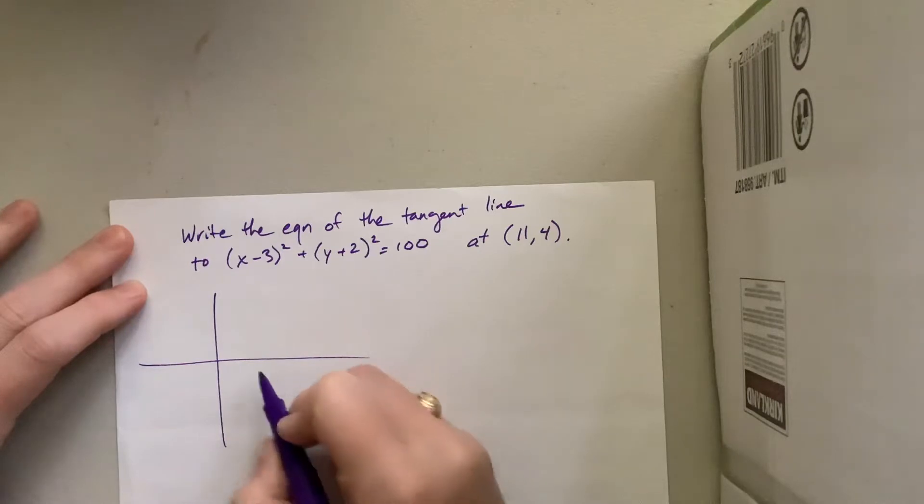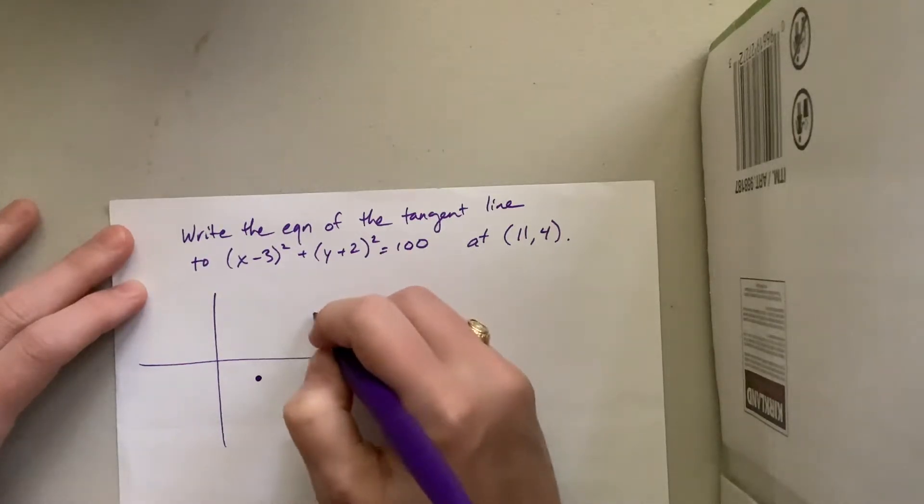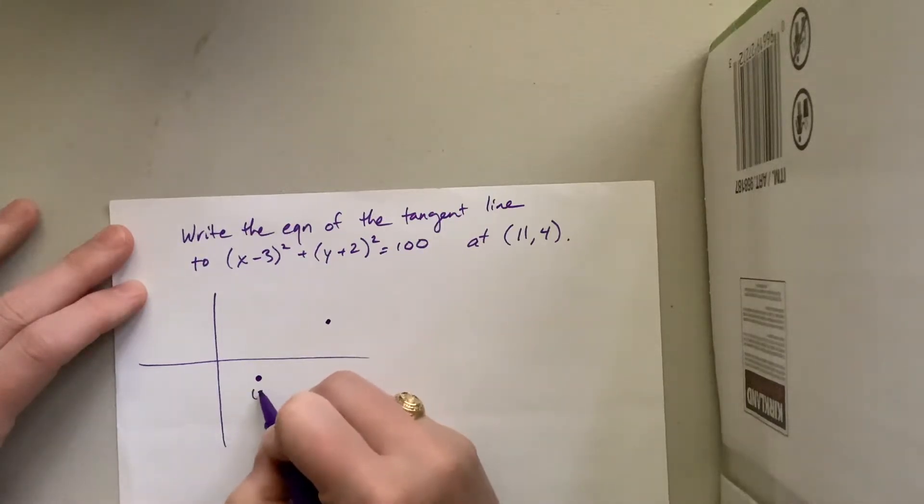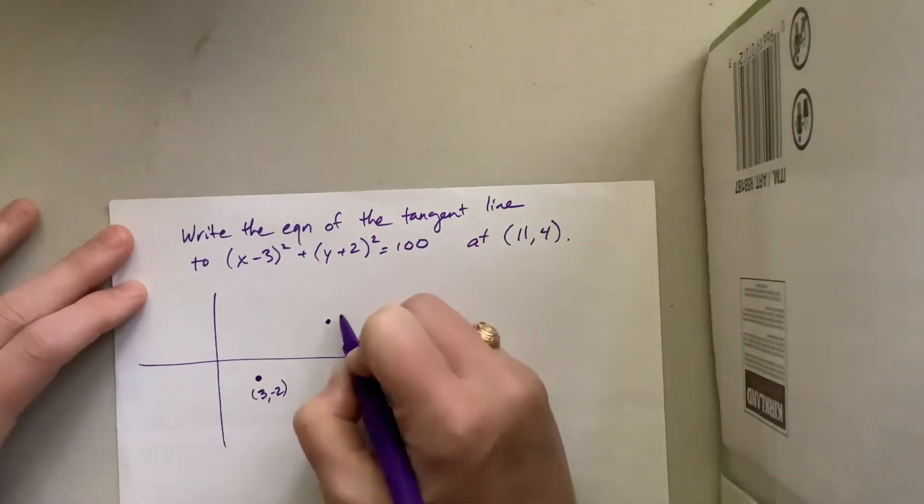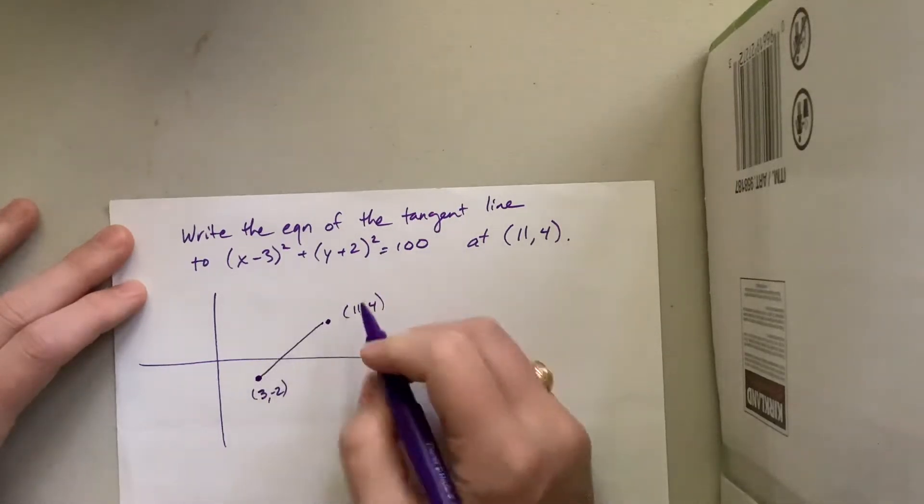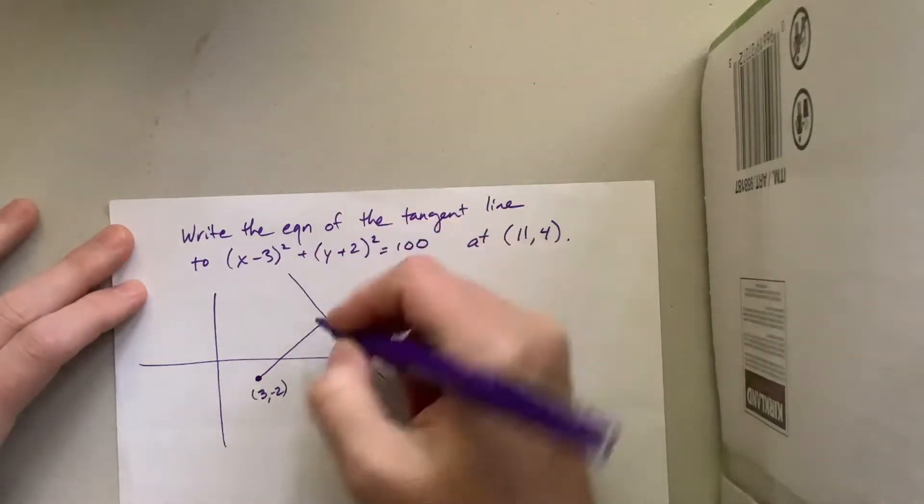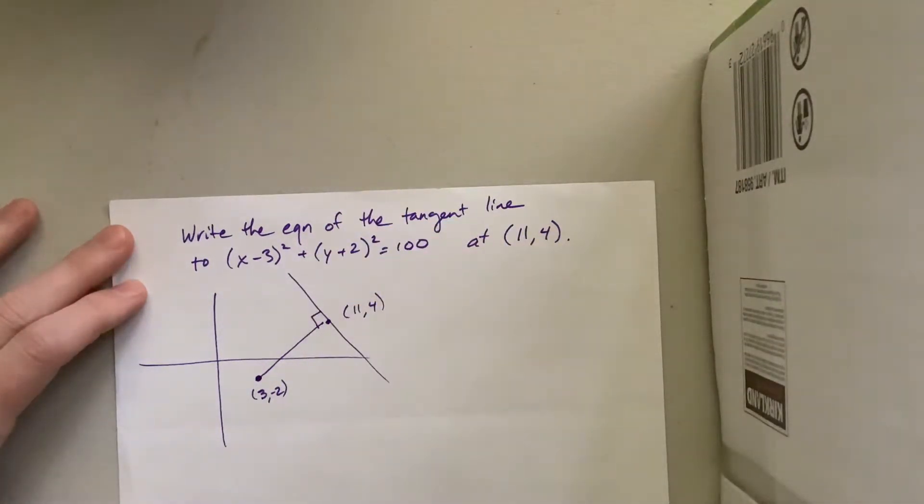We had our center at (3, -2), and then our point over here was at (11, 4). And this was the radius of our circle. Well, keep in mind that the tangent line is going to be perpendicular to that. So to find that tangent line, we've got a point. We need a slope, and we know that whatever this slope is, we want the negative reciprocal to find that one.